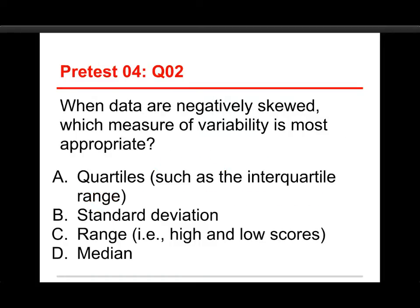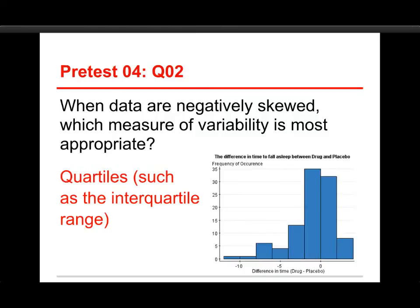Number two: when data are negatively skewed, which measure of variability is most appropriate? The choices are the same. The answer again is the quartiles such as the interquartile range. We've got a negatively skewed distribution, and while we have some really outlying scores on the far left, they would not be included in the calculation of the quartiles. This makes the interquartile range a relatively robust measure of spread for a lot of variations on distributions.